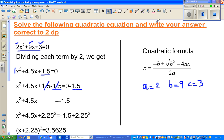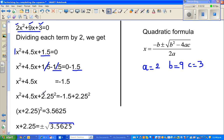So you will have x² + 4.5x = 0 - 1.5 = -1.5. Now, as I discussed in previous videos, we have to make this a complete or perfect square.